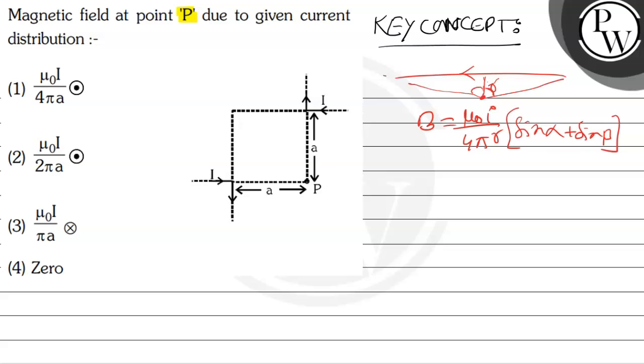If the wire is semi-infinite, we can see the wire is here and point is here. You can say that alpha is zero and beta is 90 degrees. Then the formula will be mu naught I by 4 pi r.